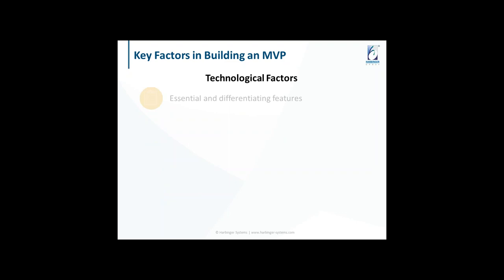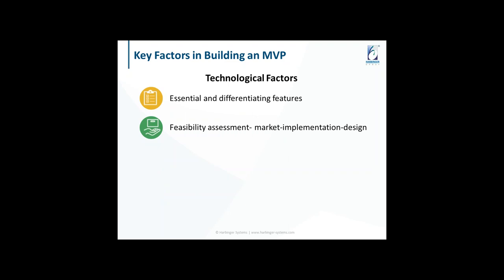Looking at the technological factors — it definitely has to have differentiating features, because otherwise users won't like it. The next thing to consider is feasibility: market feasibility, implementation feasibility, and design feasibility. For example, some clients want mobile applications on both iOS and Android, but Apple is very selective and certain things don't work on iOS. Implementation feasibility is something you should look at carefully. You should not build your product on something that is not yet released.